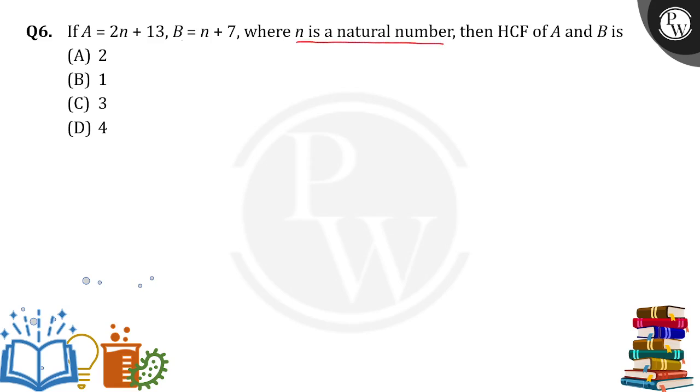So here given n is a natural number. Natural number starts with 1. Why don't we take n is equal to 1?